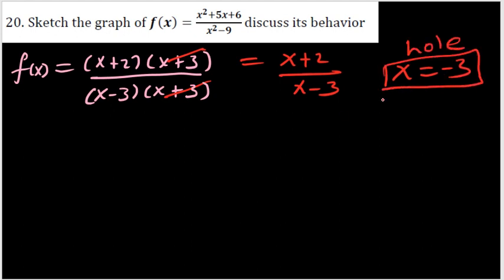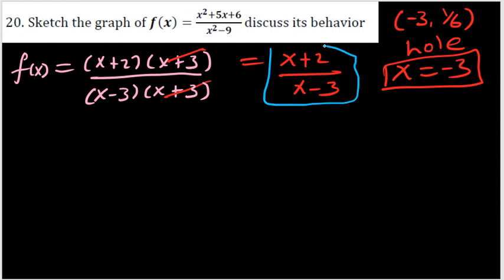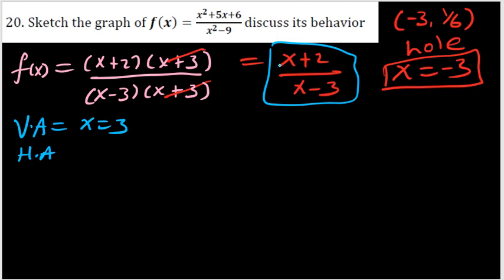Because we cancelled x+3, the graph will have a hole at x = -3. At x = -3 in the simplified form, we get (-3+2)/(-3-3) = -1/-6 = 1/6, so the hole is at the point (-3, 1/6). After simplification, the function has a vertical asymptote at x = 3, where the denominator equals zero.